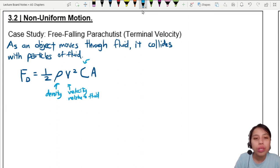Then there is C, which is something new called the drag coefficient. And lastly, your cross-section area of your object.